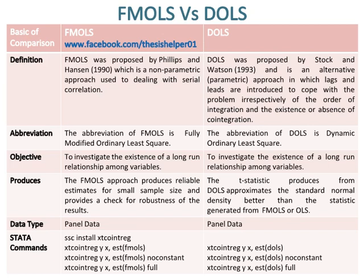The objective of both FMLS and DOLS is to investigate the existence of a long-run relationship among variables. The FMLS approach produces reliable estimates for small sample size and provides a check for robustness of the results.